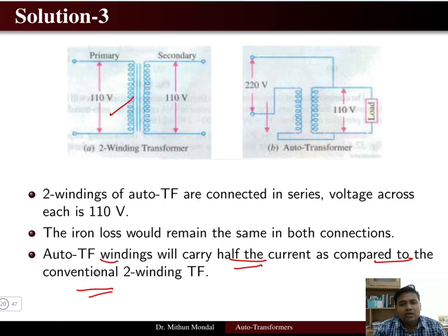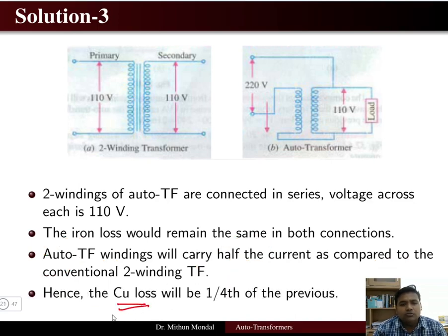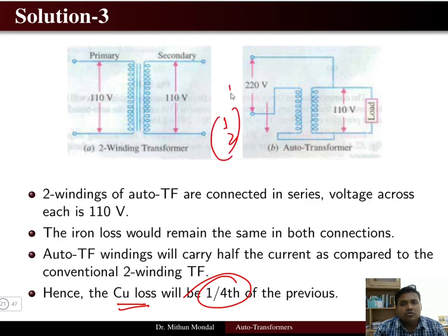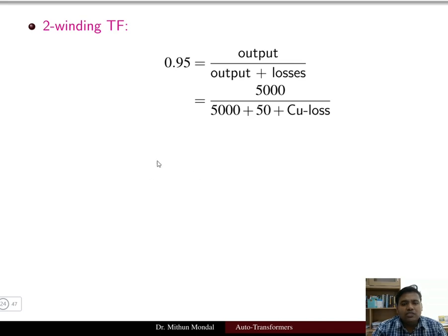The auto transformer will carry half the current compared to the conventional two winding transformer. Since copper loss is proportional to current squared, the copper loss of the auto transformer will be (1/2)² = 1/4 of the two winding transformer value. We first solve for the two winding transformer efficiency and then proceed to the auto transformer.